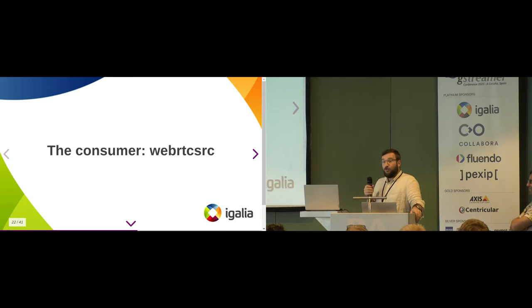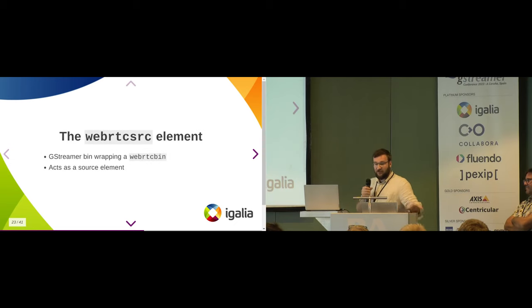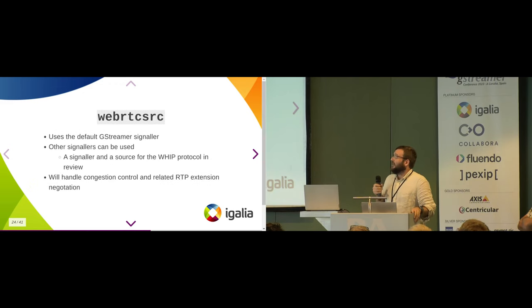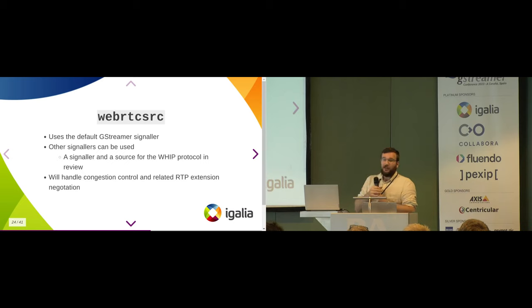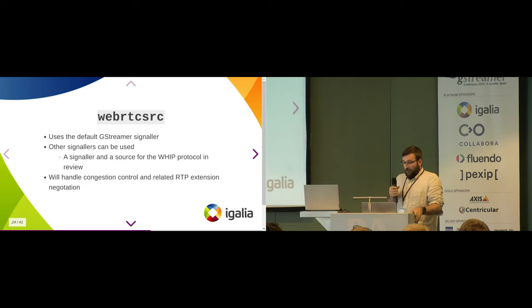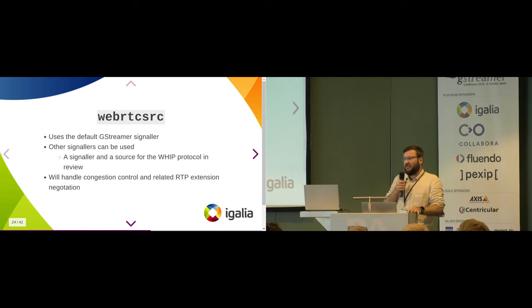Now I'm going to talk about the consumer side, which is a source element — a very simple GStreamer source that wraps WebRTC Bin and acts as a source element. The nice thing in terms of implementation is that we can reuse the signaler objects defined as part of WebRTC Sync, so you have one signaler implementation for each protocol we handle. Internally we listen to signals on the signaler to connect to the peers the user chooses for the WebRTC source. We still have some work to do on some signalers to be able to use them for the source, but it's usually simple.